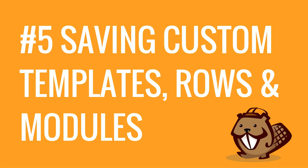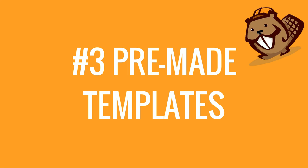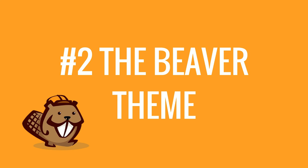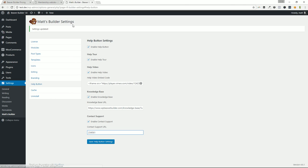Let's recount the top five reasons to buy the pro or agency version of Beaver Builder. Number five: saving custom templates, rows, and modules. Number four: the modules themselves, especially killer modules like WooCommerce. Number three: the pre-made templates that save you loads of time and can be mixed and matched to supercharge a WordPress website build. Number two: the Beaver Builder theme, which comes with a plethora of options to style your site. And number one: the support from Beaver Builder is top-notch and the best reason to upgrade to a paid plan. My name is Matt — Plugin Tut — subscribe to the channel, we are inches away from 500 subscribers. See you later!